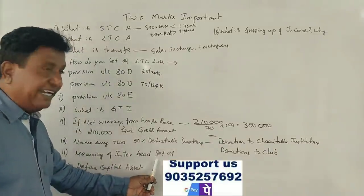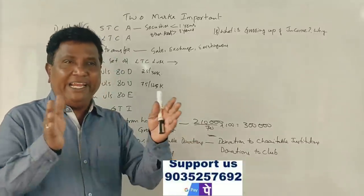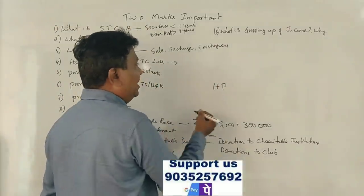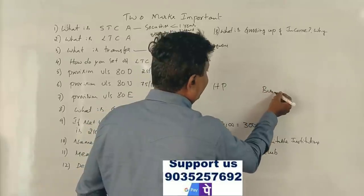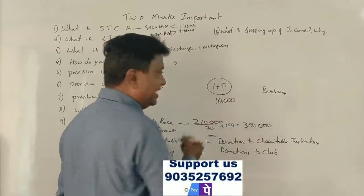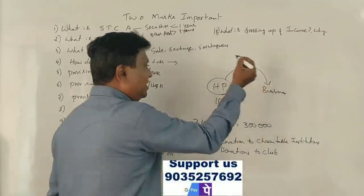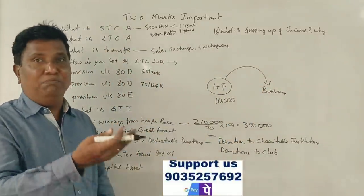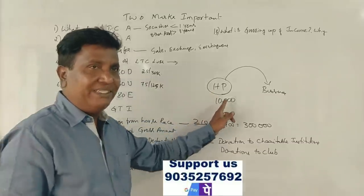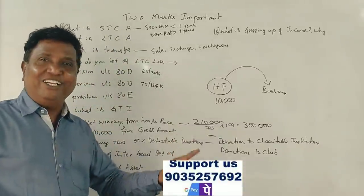Give the meaning of inter-head set-off. Inter-head. This is the case of house property. This is the case of business income. House property is 10,000 rupees loss. That loss can be set-off against another head of income. Loss from one head can be set-off against another head.